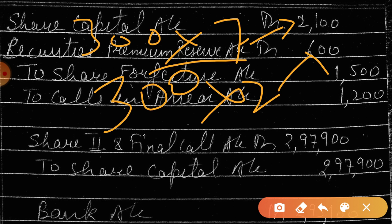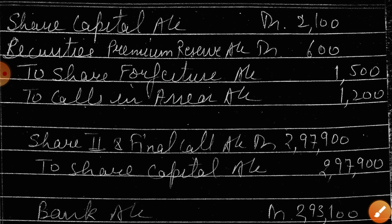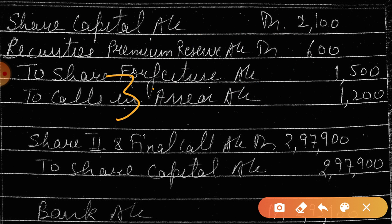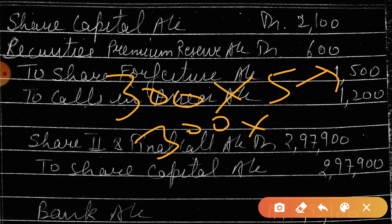How is the share forfeiture amount calculated? Sir, the amount received — 300 shares were there. 2 rupees on application and 3 rupees on allotment, that means 5 rupees. That shareholder has not paid the amount of first call — calls in arrear.